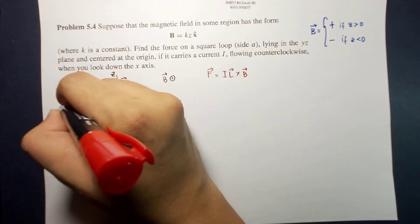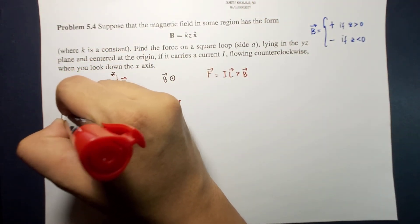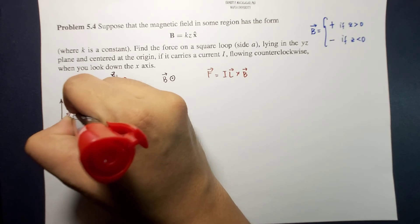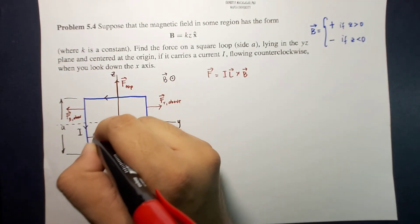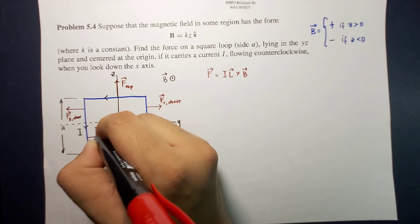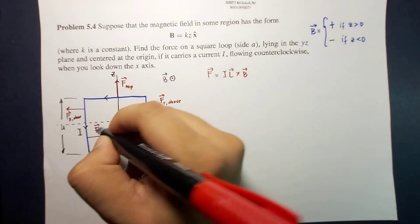So this is F for the left and above, and the other half, the opposite direction. So this is F left below.